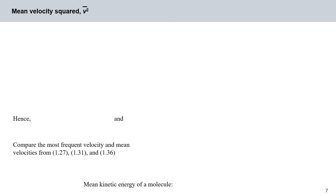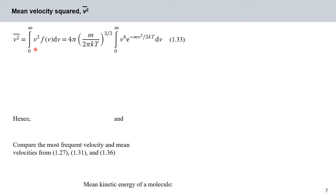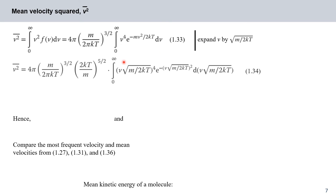From our expressions for kinetic energy there is a v² term, so we need the mean velocity squared v²̄ to calculate the mean kinetic energy. We integrate the product of v² and the normalized distribution function to get equation 1.33. Again we expand v by x = v · √(m/2kT) and pull out the constants, leaving an integral of the form ∫₀^∞ x⁴ · e^(−x²) dx.